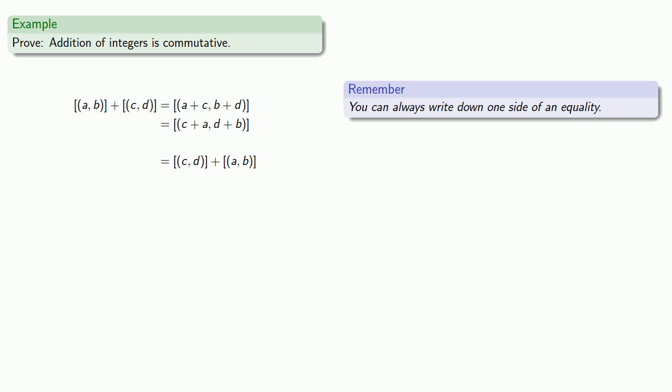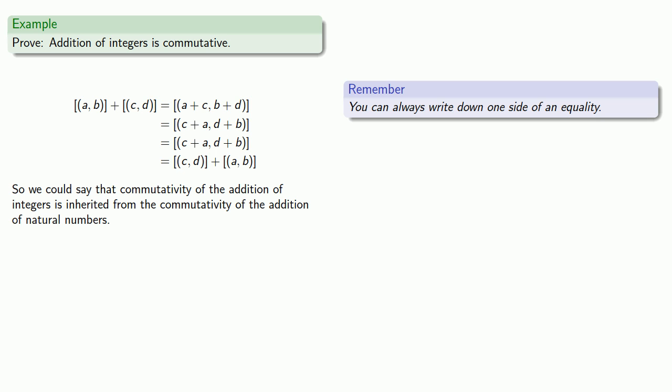The right-hand side has a very specific definition from our definition of addition. And so, this second and third line are identical, and so we can join our bridge. And one way we might express this is that we could say that the commutativity of the addition of integers is inherited from the commutativity of the addition of natural numbers. But it still requires a proof.